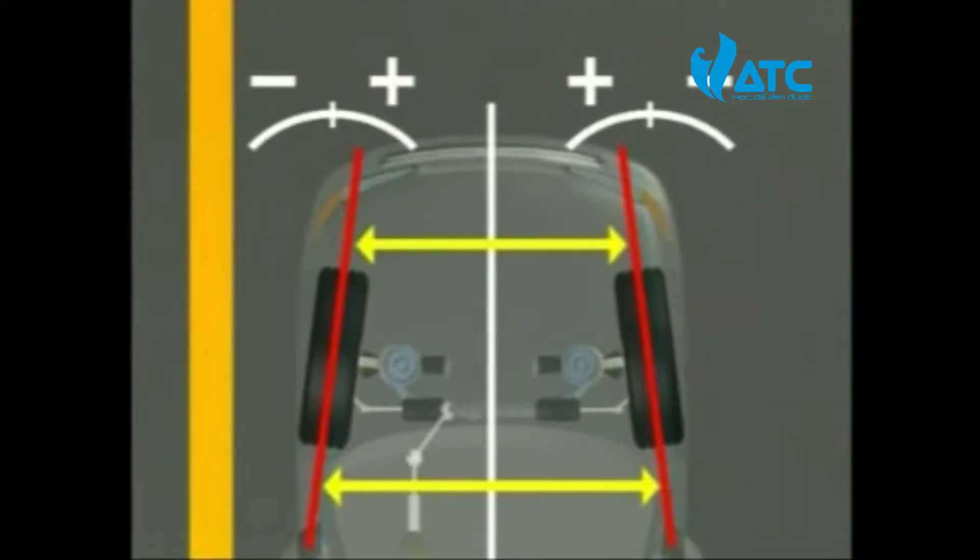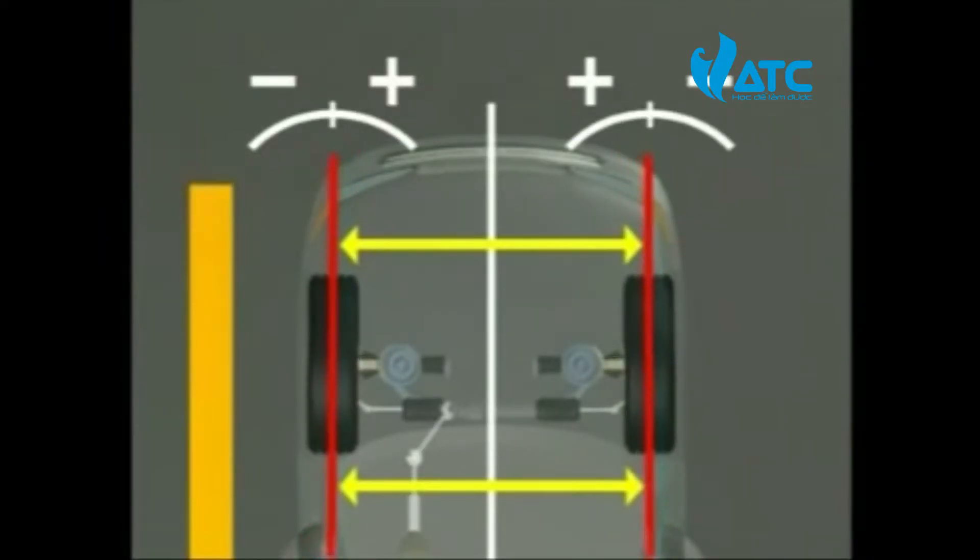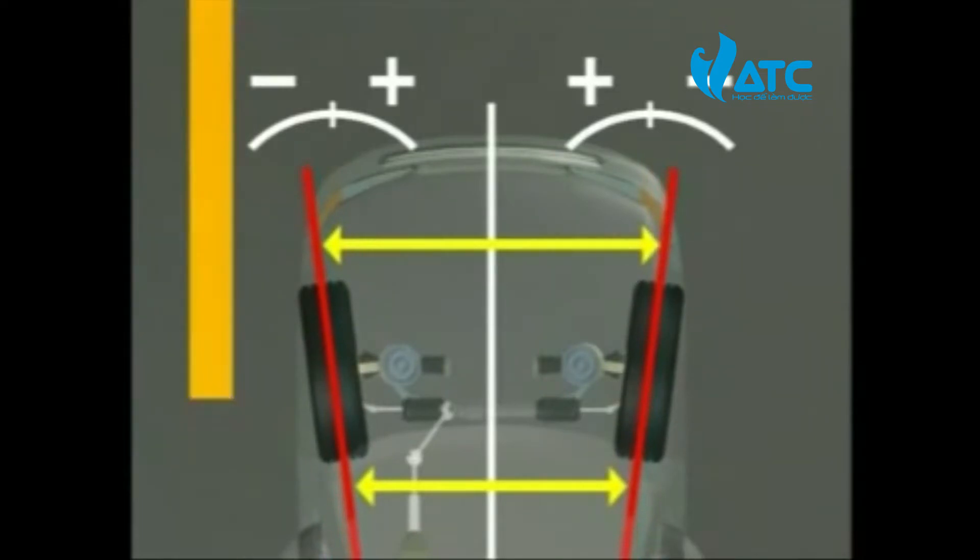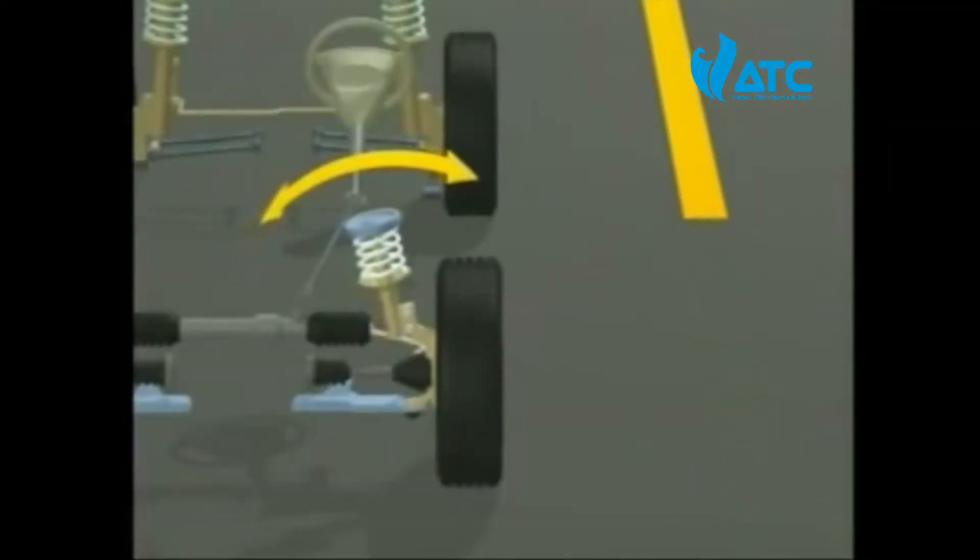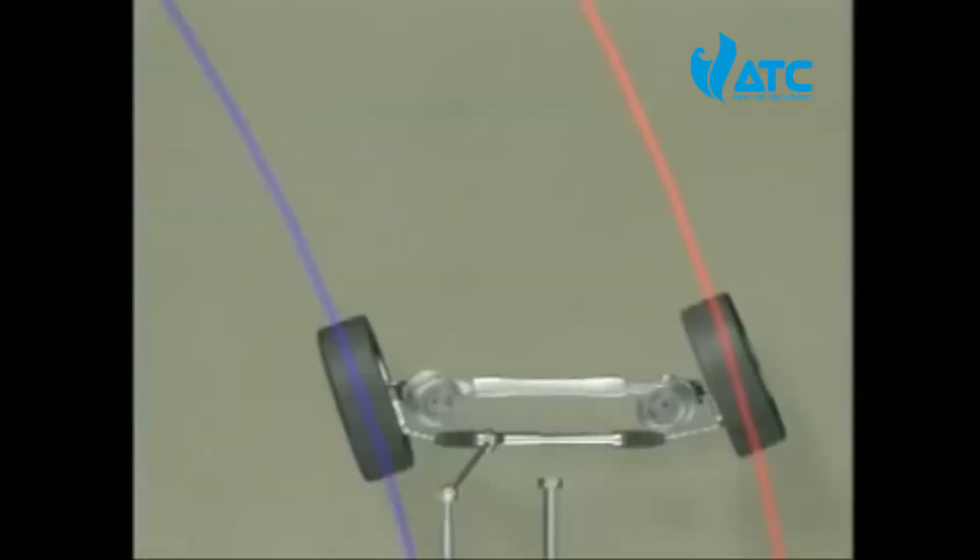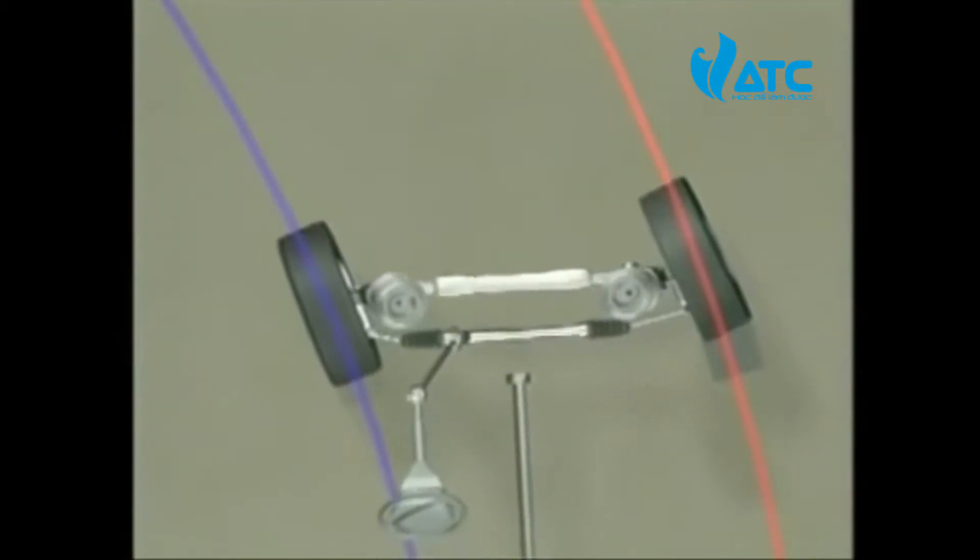Other parameters to check for correct wheel alignment include chassis height, steering axis inclination, included angle, and turning radius.